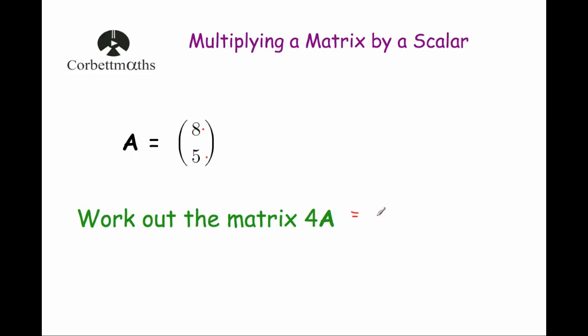So let's do that. We've got 8, and 4 times 8 is 32. We've got the element 5, so 4 times 5 is equal to 20. And that's it — so the matrix 4A would be [32, 20].